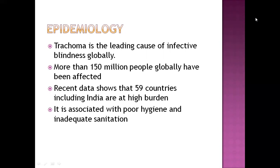Trachoma is the leading cause of infective blindness in the whole world. More than 150 million people globally have been affected due to trachoma. Recent data shows that 59 countries including India are at high burden, because there are many people who are below the poverty line and who have poor hygiene and inadequate sanitation in their environment.